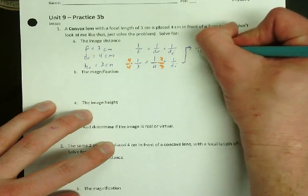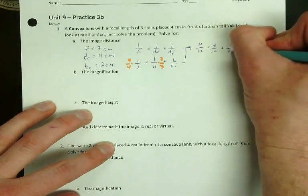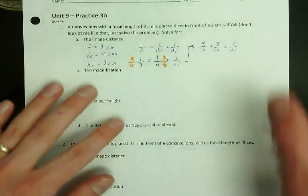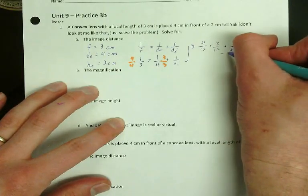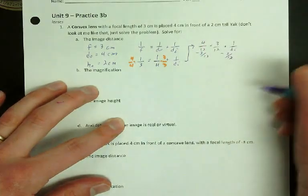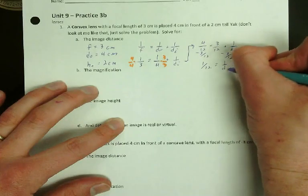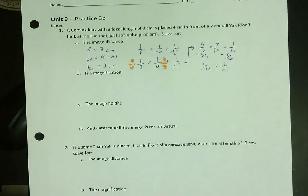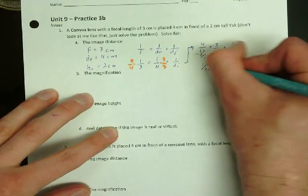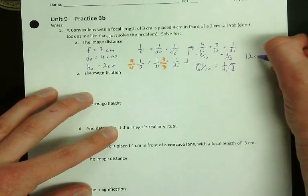Gives me 4 over 12 equals 3 over 12 plus 1 over DI. Then we're going to subtract the 3 over 12 to get DI by itself. So that gives me 1 over 12 equals 1 over DI. Now remember, that's not the final answer. All you've got to do to get the final answer here is flip them. Which is why I say it's easier to use fractions than decimals. So this becomes 12 equals DI.